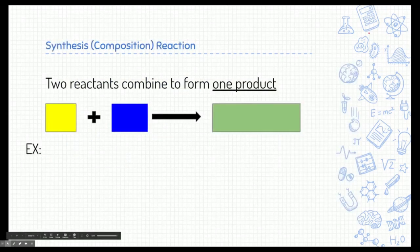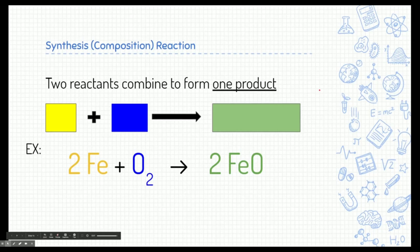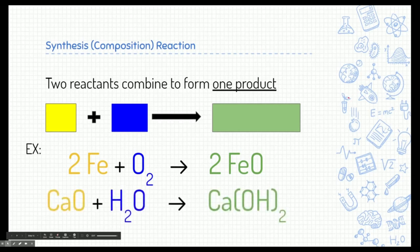Let's start with a composition, not a combustion, a composition or a synthesis reaction. This is where two reactants combine to form one product. Notice we have two things combining to form one. Here's an example of that. Here we have iron and oxygen and they form iron oxide. So two elements forming one compound. It could be two compounds forming one compound as well. Here's calcium oxide and water forming calcium hydroxide. Again, two substances coming together to form one product.